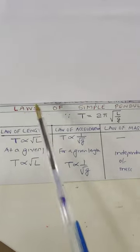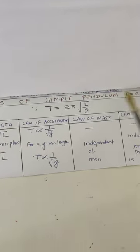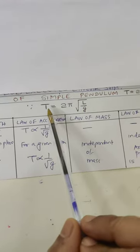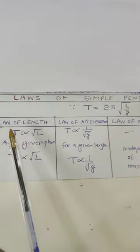Let us understand laws of simple pendulum. It is based on the formula T equal to 2π root of l/g. Based on this there are four laws.